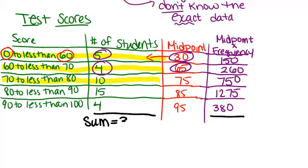So that means that there are 38 students in our population, maybe 38 students in the class. The sum of all the midpoint frequency products is 2,815.